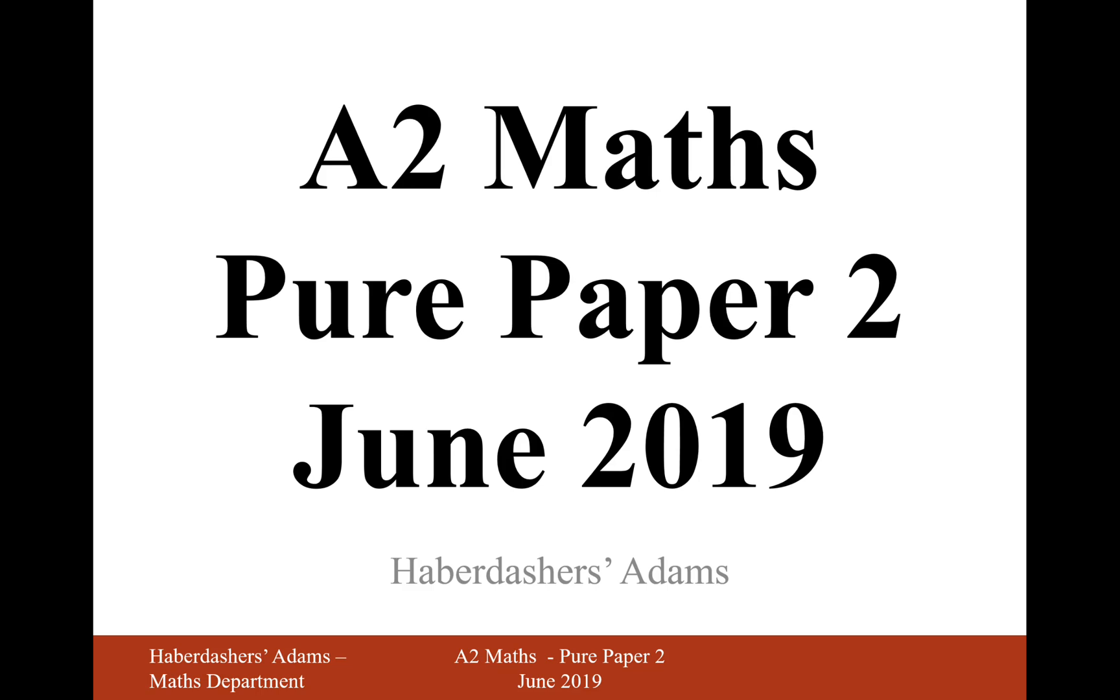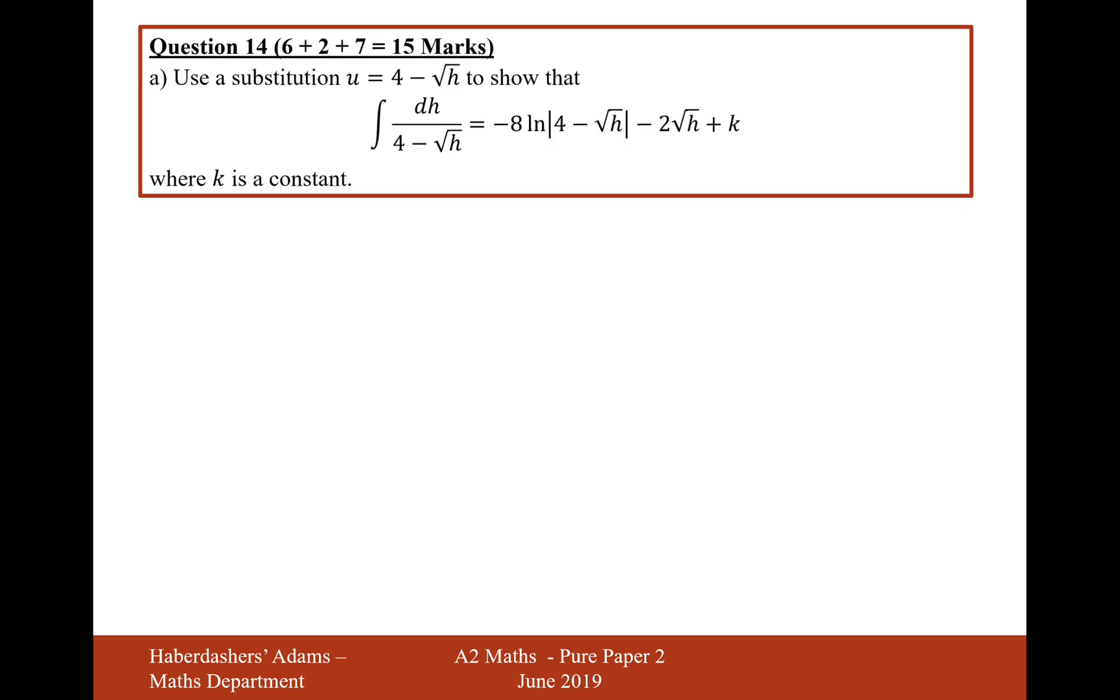Hello there and welcome to the June 2019 paper. Here we're looking at question 14, the final question on this paper. 15 marks, so it's going to be a big one. Use a substitution of u equals 4 minus root h to show that this integral equals this expression here. Well, this first integral here looks a little bit in a strange form. You could effectively write this as 1 over 4 minus root h dh.